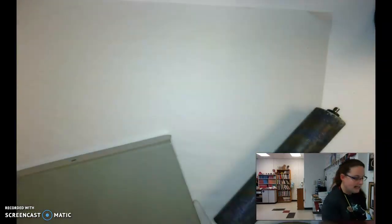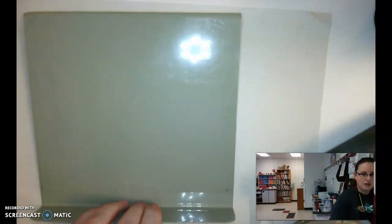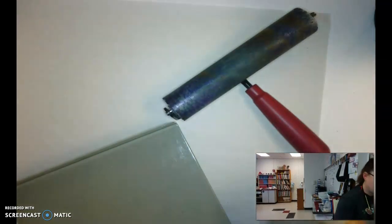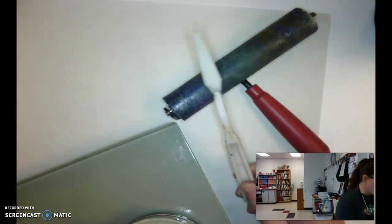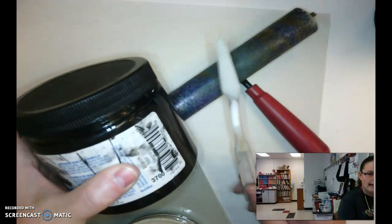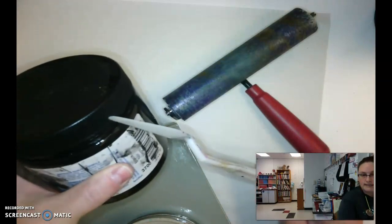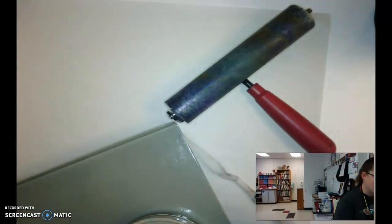You also need a bench hook, and it's called a bench hook because there's a hook that can hook right onto the edge of your table. You need what's called a brayer, a baron, and a palette knife is super helpful to scoop out your ink. This is water soluble ink which means it cleans up very easily with water, which is great.